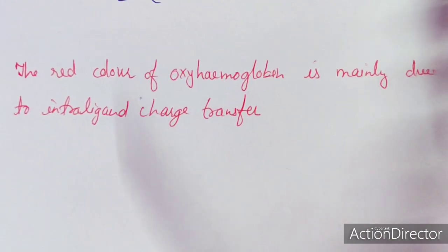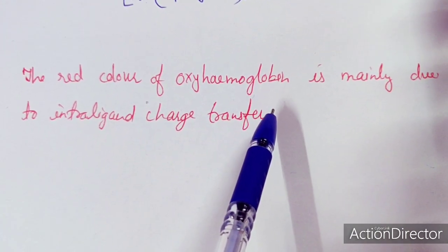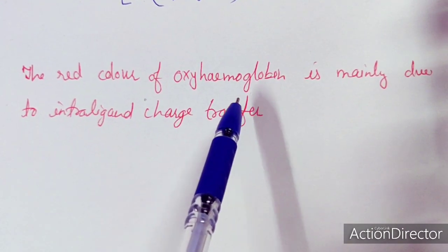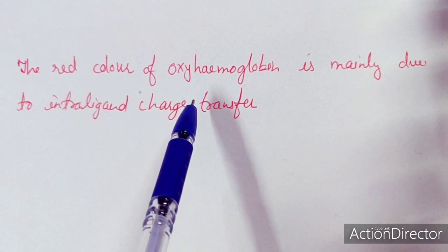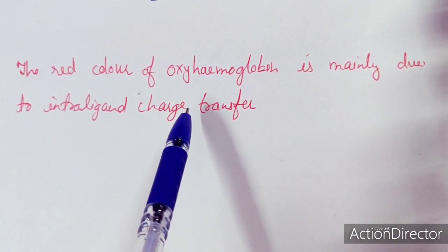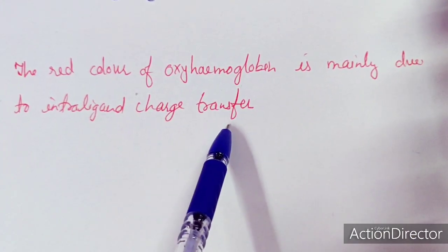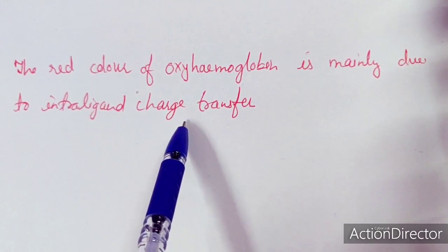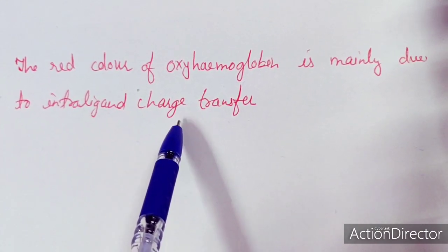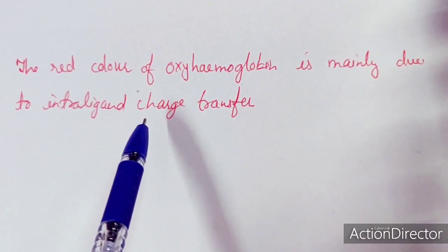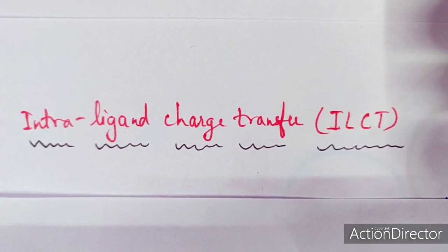A well-known biological example is oxyhemoglobin. Hemoglobin contains a porphyrin ring, and oxyhemoglobin is red in color while deoxyhemoglobin is purple-red. The difference in color between oxy and deoxyhemoglobin may relate to the different states of iron, but the primary red color of oxyhemoglobin is due to intra-ligand charge transfer within the porphyrin ring, specifically pi-to-pi* transitions.